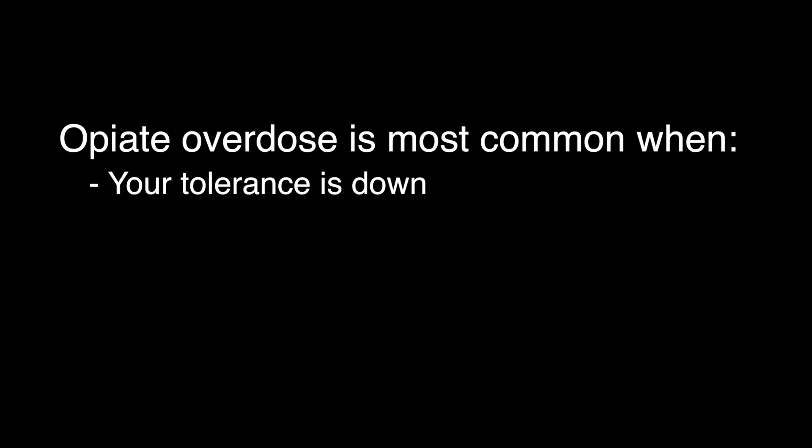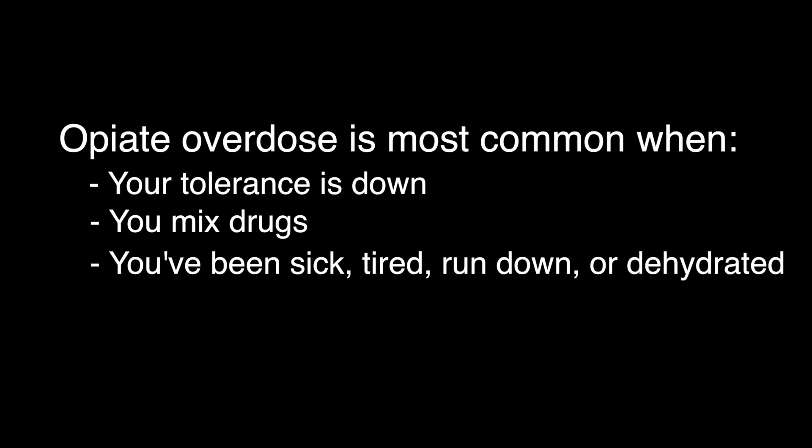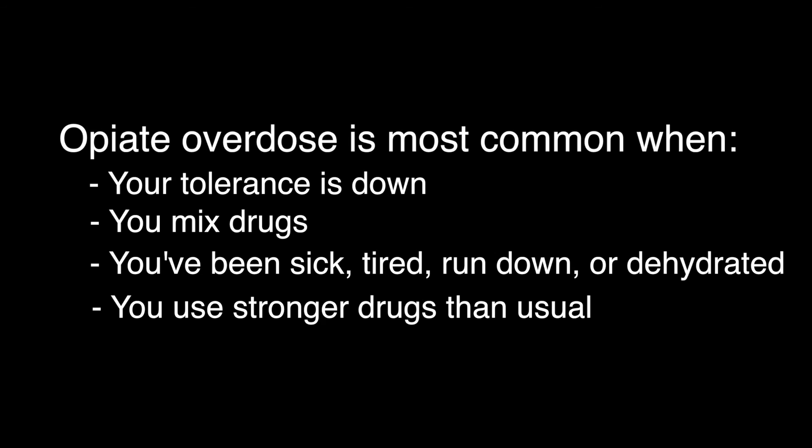Prevent Overdose. Opiate overdose is most common when your tolerance is down after you take a break from using; when you mix drugs, especially combinations of downers like heroin, methadone, or other opiates, alcohol, and benzodiazepines; when you've been sick, tired, run down, or dehydrated; or when you use stronger drugs than usual. To prevent overdose, go slow after breaks or if you're using something stronger, be careful when mixing drugs, take care of yourself — eat, sleep, and drink water.